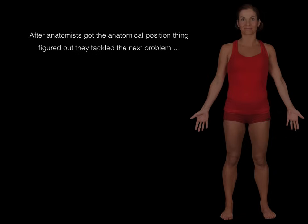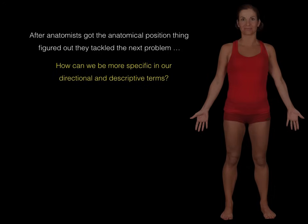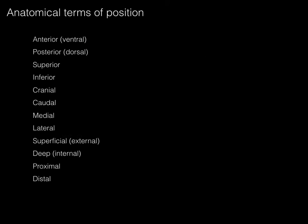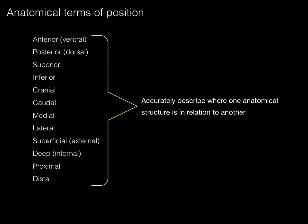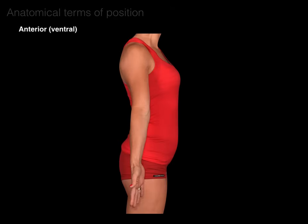So now, after anatomists got the anatomical position figured out, they tackled the next problem: how can we be more specific in our directional and descriptive terms? That's where we come up with anatomical terms of position. This list of terms helps to accurately describe where one anatomical structure is in relation to another. These are the most common ones used in anatomy and in the healthcare system.